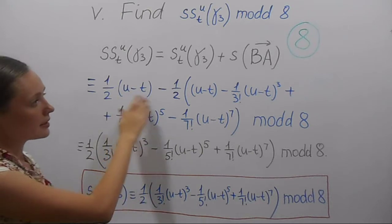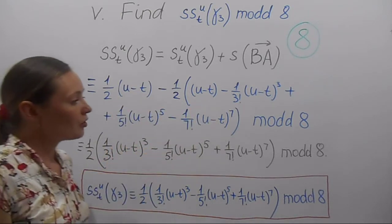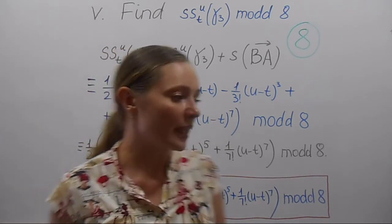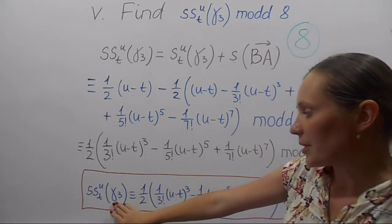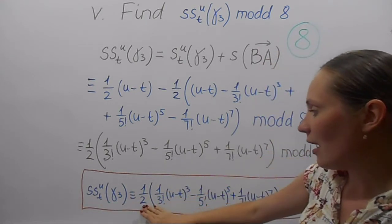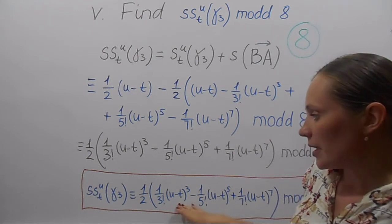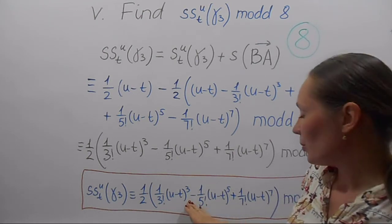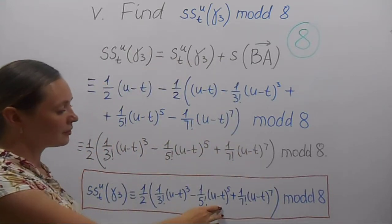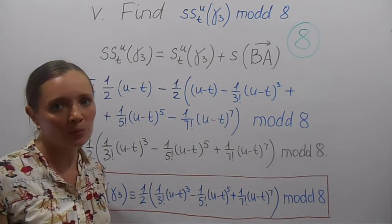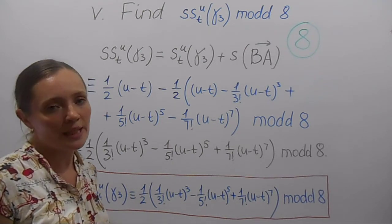One can see that these two terms cancel. So finally, we get the formula that the slight sine area of γ3 is one half of: (1/3!) (u−t)³ minus (1/5!) (u−t)⁵ plus (1/7!) (u−t)⁷, and everything is mod d8.